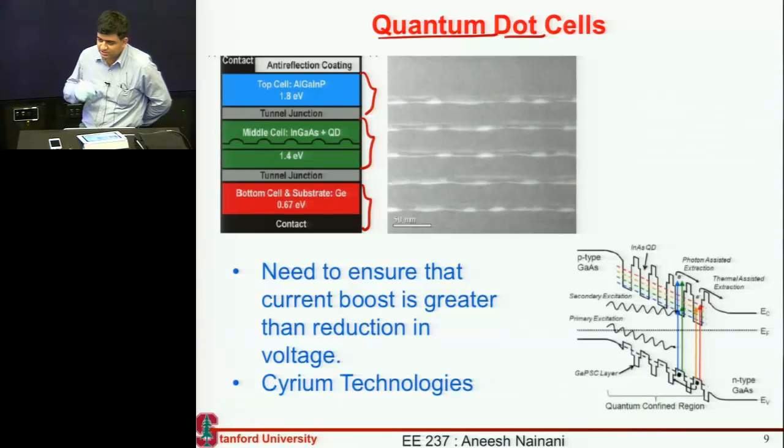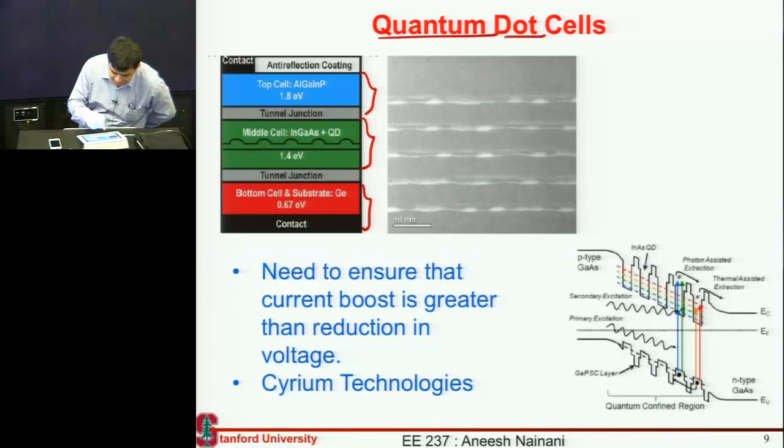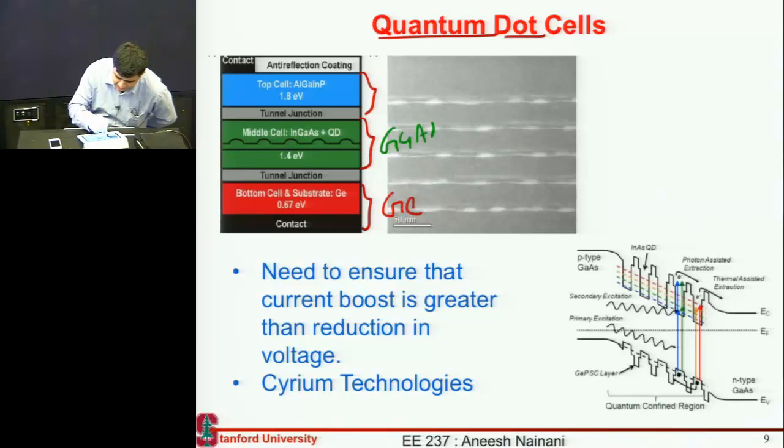One way you can tune the bandgap of the cell which is not optimum is to put quantum wells in it or put quantum dots in it which would effectively lower or increase its bandgap. For example, the most common cell that is used is germanium, gallium arsenide, and then indium gallium phosphide cell.